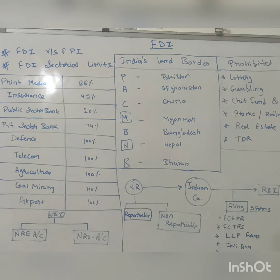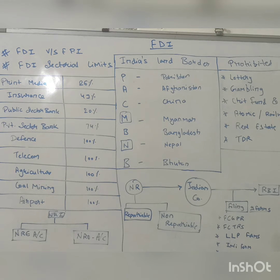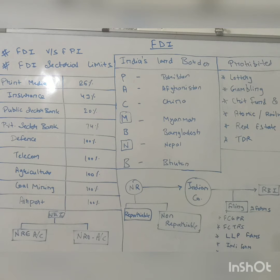Recently, a major amendment came when COVID started. The Indian government declared that FDI cannot be brought under the automatic route from countries who share land borders with India. For easy memorization, here is an acronym using the letters M and N forming PAC-MBB-N: P for Pakistan, A for Afghanistan, C for China, M for Myanmar, B for Bangladesh, N for Nepal, and B for Bhutan. From these countries, any FDI must come through government approval.